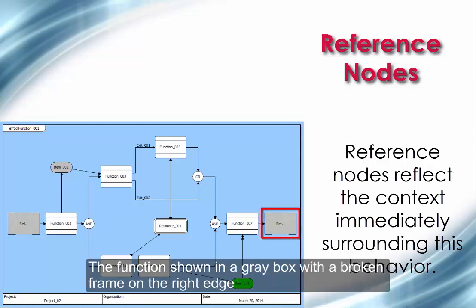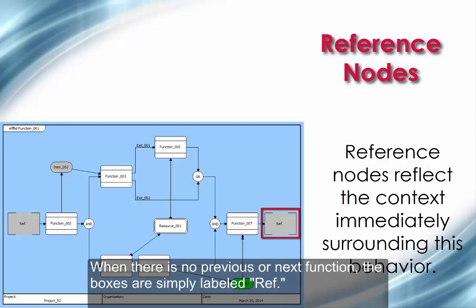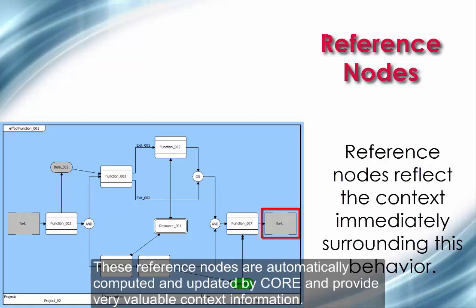The function shown in a gray box with a broken frame on the right edge represents the next function to enable when this decomposition completes, the sync of control flow. When there is no previous or next functions, the boxes are simply labeled REF. These reference nodes are automatically computed and updated by CORE and provide very valuable context information.